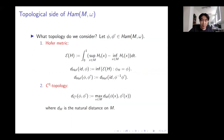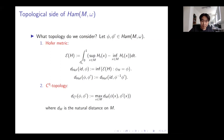I want to talk about two topologies we consider today. The first is the topology coming from the Hofer metric. The Hofer metric is basically the least amount of Hofer energy you need to map one Hamiltonian diffeomorphism to another, and the Hofer energy is defined by the integral of the oscillation of the Hamiltonian.